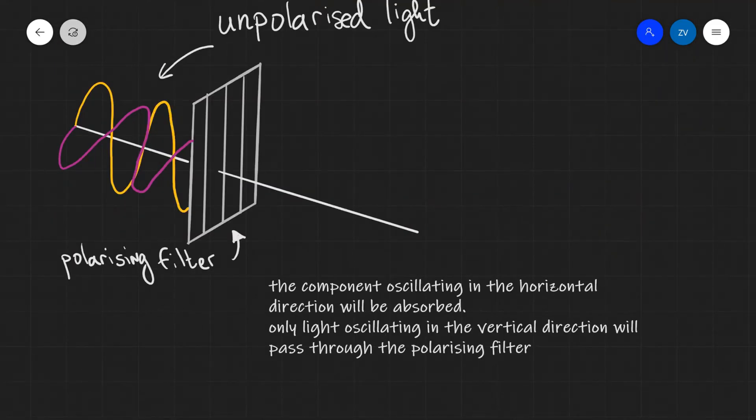Okay guys, let's have a look at how this works in terms of polarizing filters. Let's imagine that we have some unpolarized light, for instance, and we can see that the EM wave is oscillating in both planes in this case.